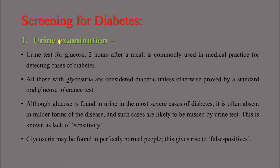Regarding screening for diabetes: urine examination — a urine test for glucose two hours after a meal — is commonly used in medical practice for detecting cases of diabetes. Ideally, glucose should not be present in urine, but in glycosuria (presence of glucose in urine), diabetes is suspected unless otherwise proved by a standard oral glucose tolerance test. However, glucose is often absent in milder forms of the disease.